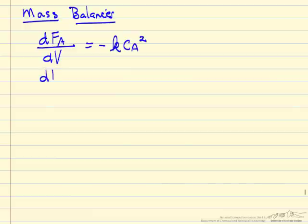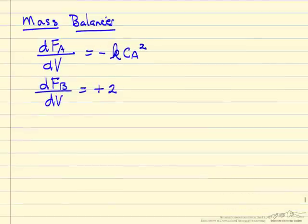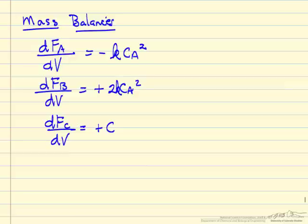The easiest way to solve this problem is to write down the mass balances for all three components. For B, which is forming, this is plus with a coefficient of 2 because the reaction is A goes to 2B plus C. Product is positive, and likewise the change in the molar flow rate of C is plus 1. We need to make sure we include k in the rate expressions.